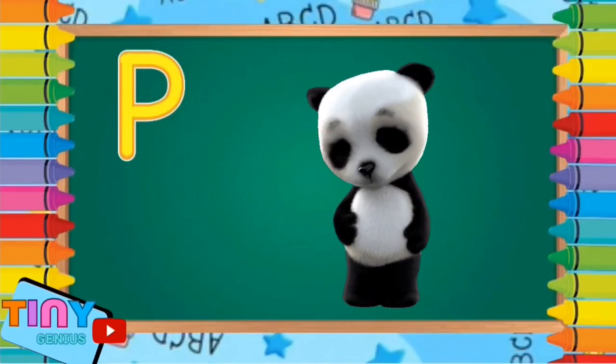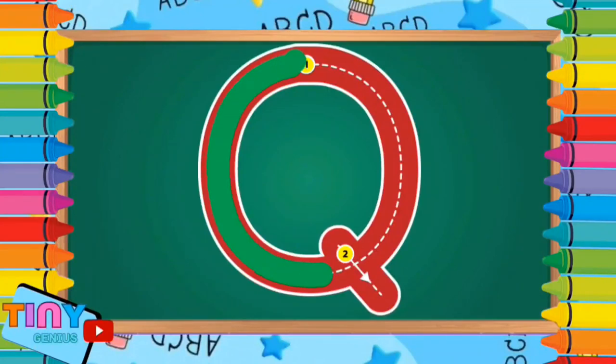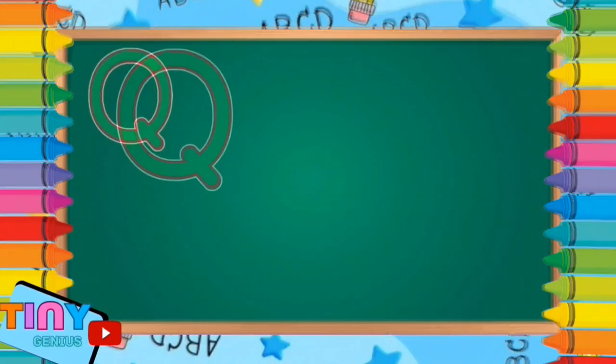Can you guess the next one? Yes, you're right, letter Q. Pull back and around and slant down. Q is for quetzal.